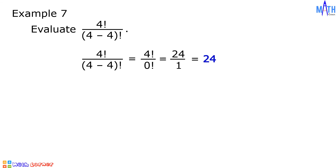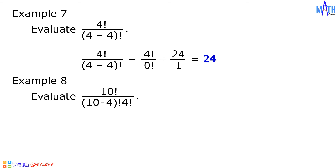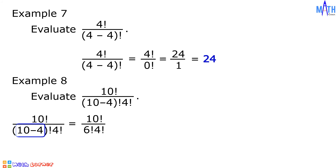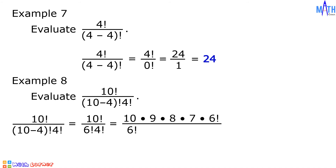Last example: evaluate 10 factorial over quantity 10 minus 4 factorial times 4 factorial. Since 10 minus 4 is equal to 6, we have 10 factorial over 6 factorial times 4 factorial. Using the cancellation method, 10 factorial becomes 10 times 9 times 8 times 7 times 6 factorial, all over 6 factorial times 4 factorial, which expands to 4 times 3 times 2 times 1.